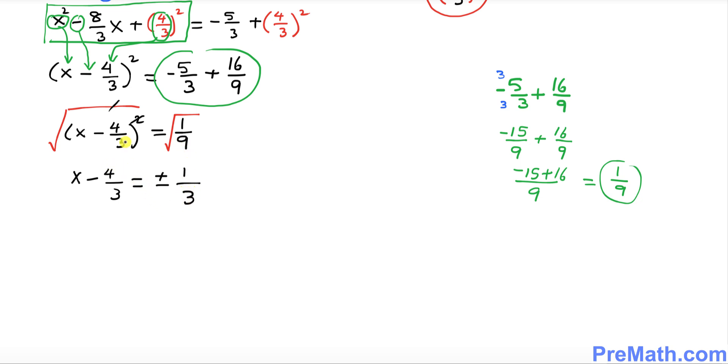Now I want you to move this negative 4 over 3 on the right hand side. So that's going to be x turns out to be, when you move this negative 4 over 3 this becomes positive 4 over 3 plus or minus 1 over 3. Now we're going to split these two fractions along with these signs.